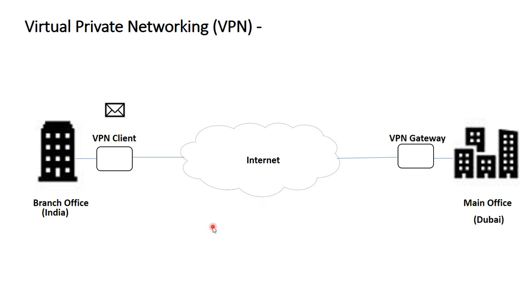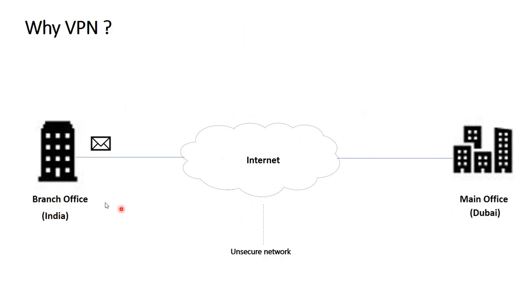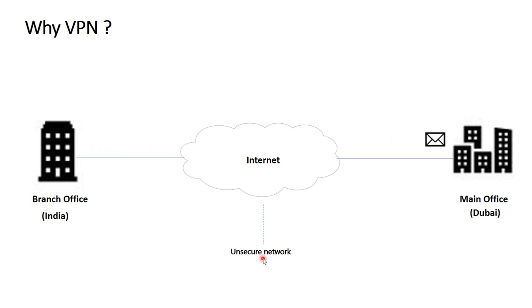For example, if you have your branch office in India and your main office in Dubai, VPN allows you to connect securely from India to Dubai over the internet. Now we will see why we need a VPN. If you are transferring data from your remote office in India to the main office in Dubai over the internet, which is an unsecured network, a hacker can attack and decrypt your data.